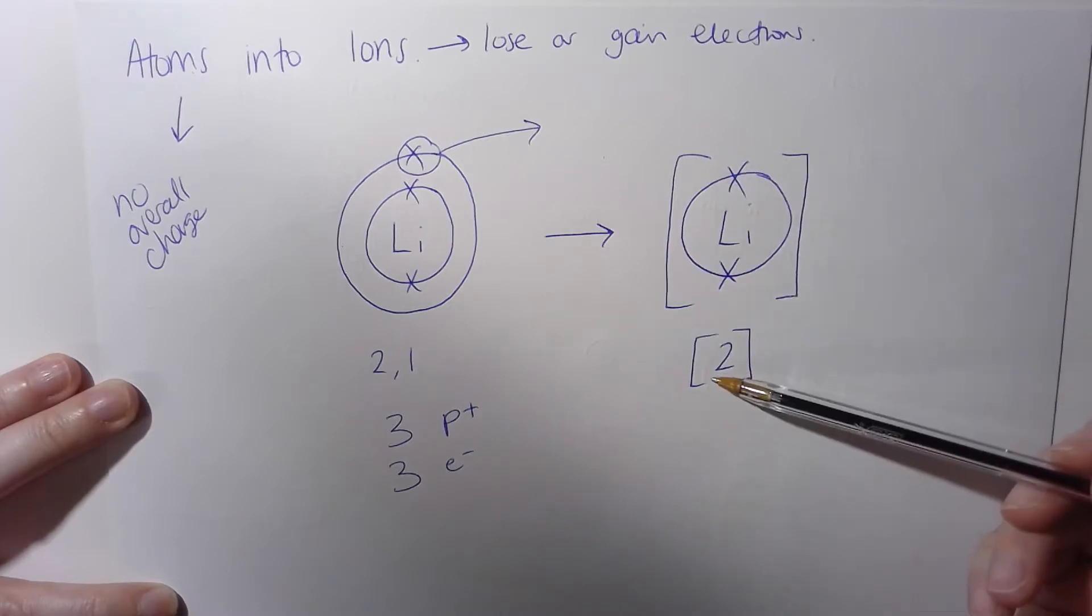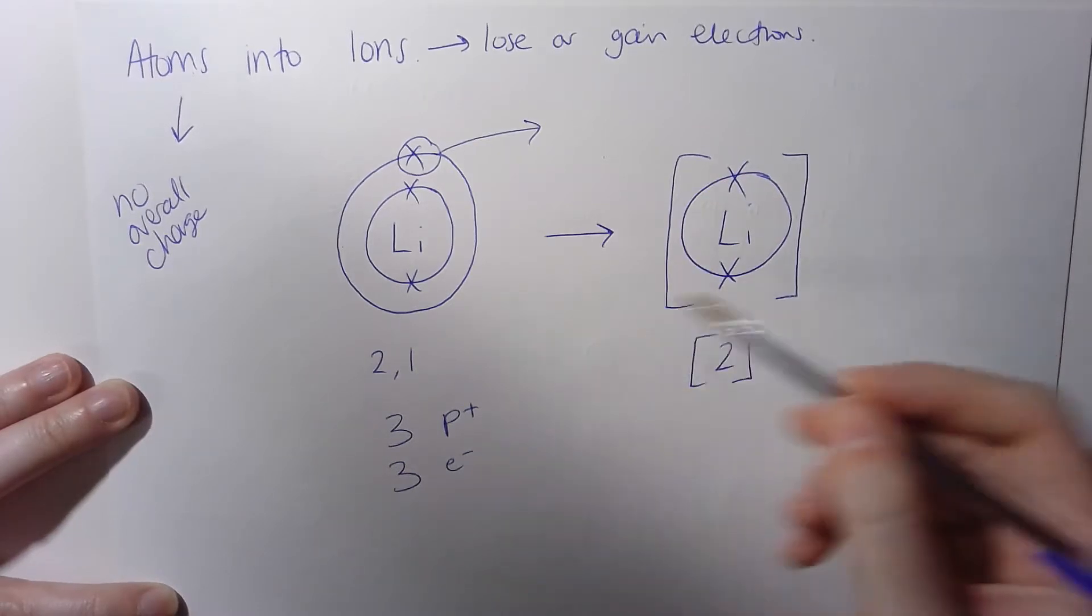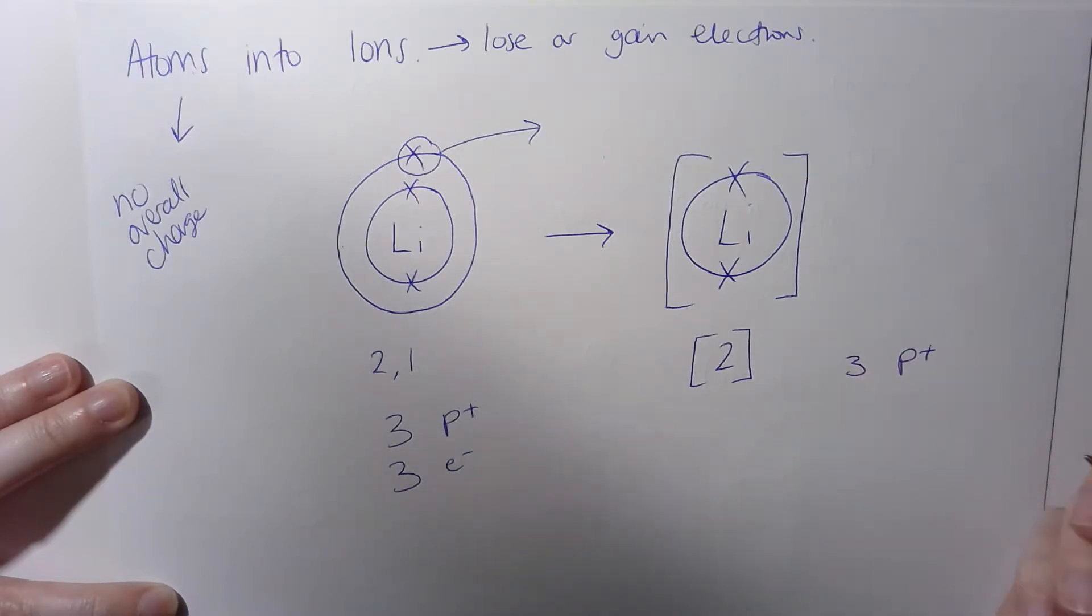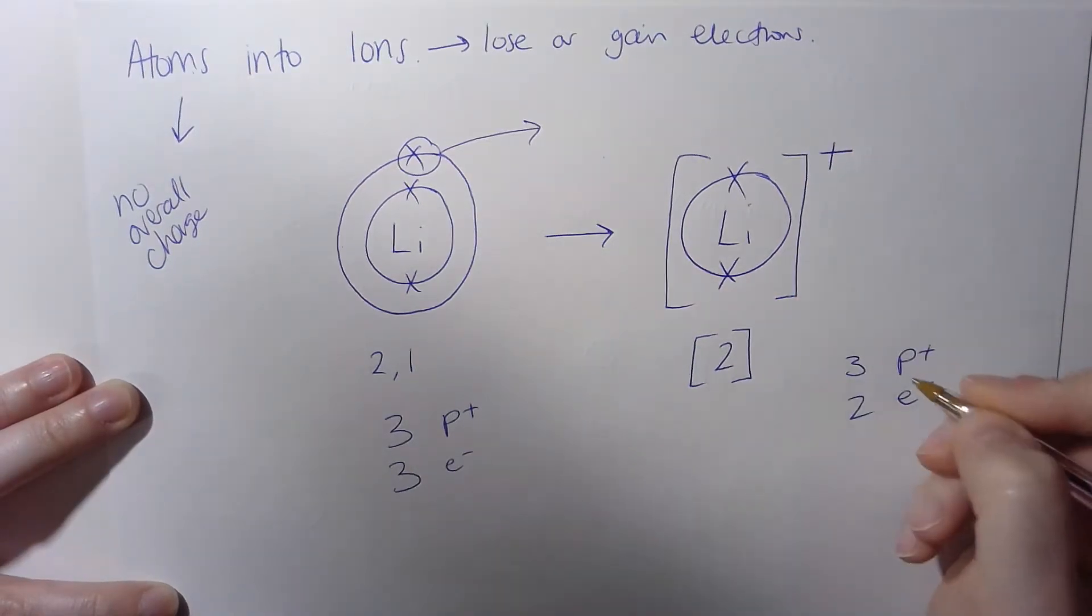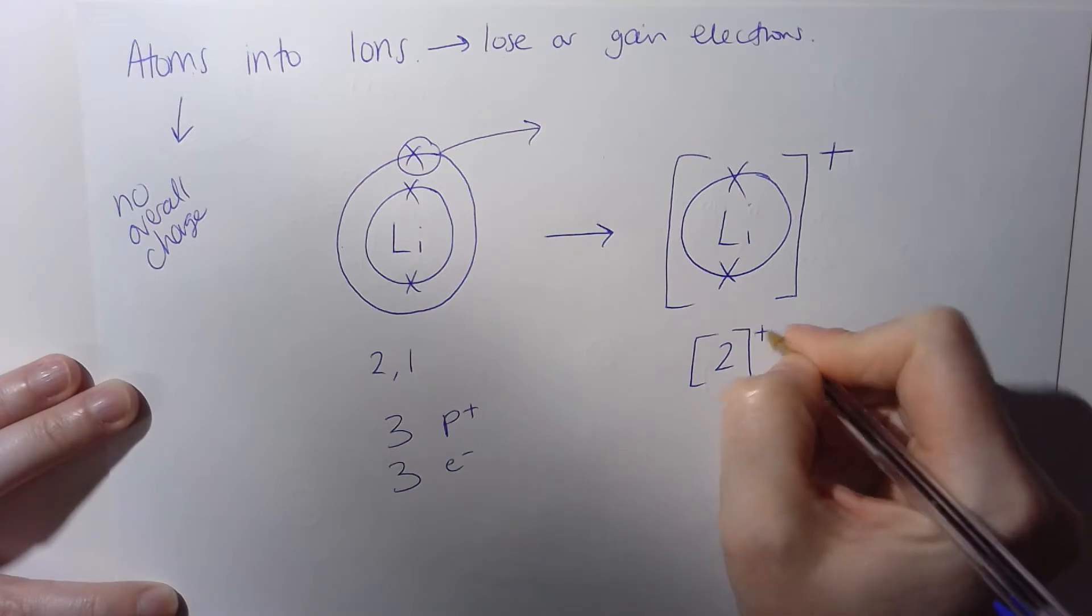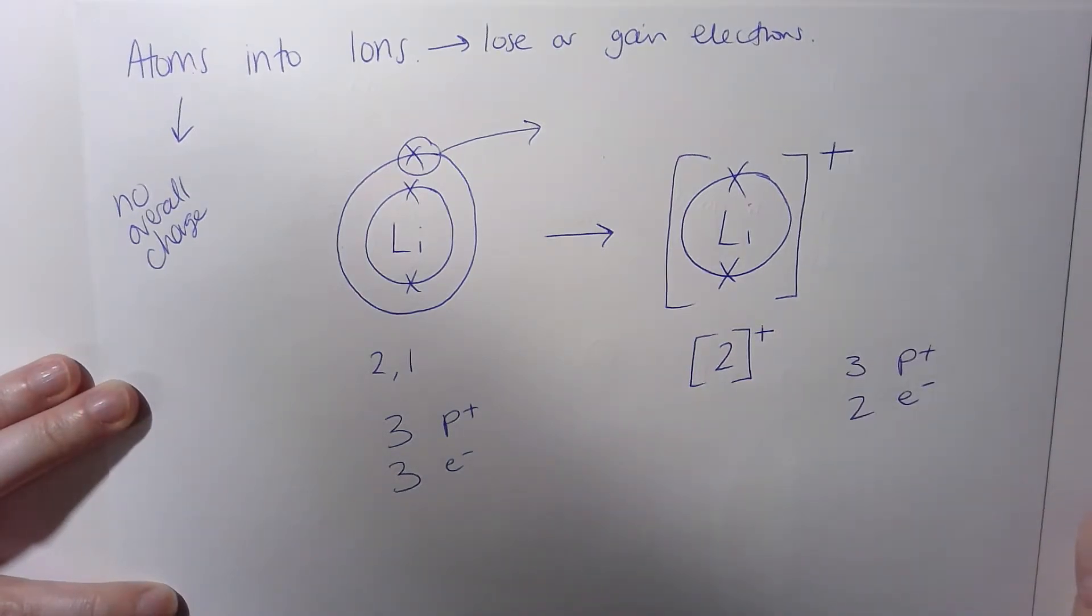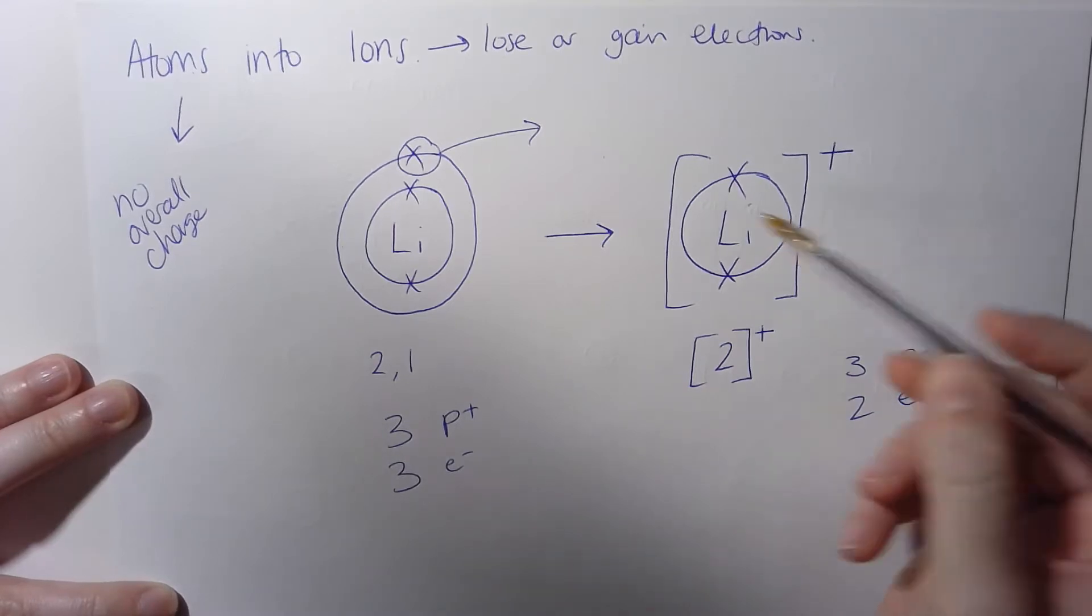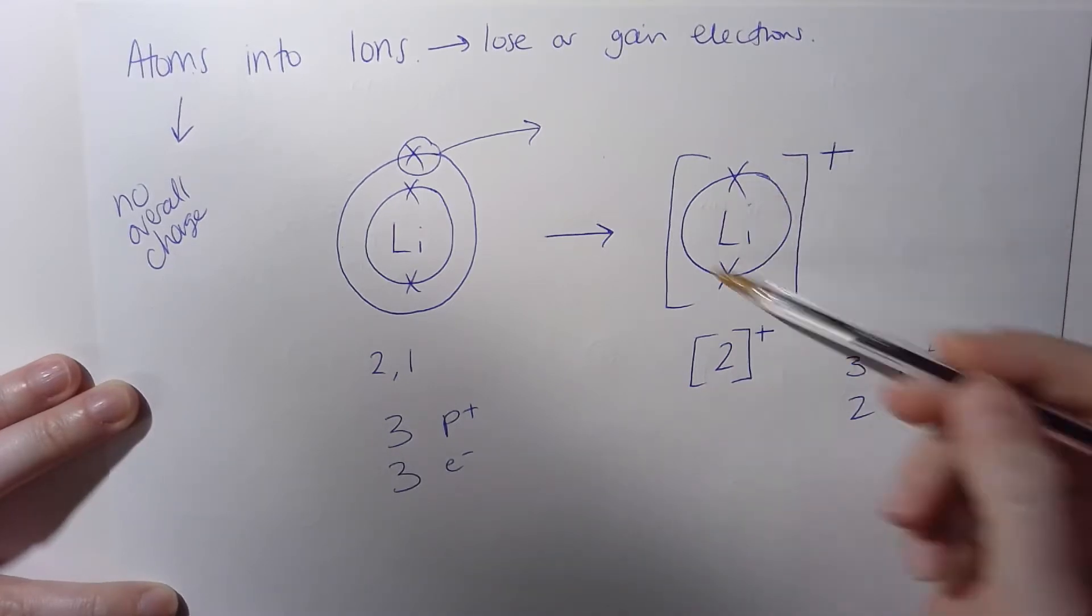The ion though has lost an electron, hasn't it? It's lost an electron to become this ion. The number of protons it has is exactly the same. That does not change. We now though have only two electrons. So if we look, we've got one extra positive charge, meaning overall this ion now is positive and it's a positive one charge. Okay, because now it only has one shell because it's lost that electron to become more stable.